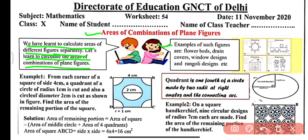Examples of such figures are flower beds, drain covers, window designs, and rangoli designs. First of all, understand about quadrant: a quadrant is one fourth of a circle made by two radii at right angles and a connecting arc. Keep in mind that a quadrant is the one-fourth part of a circle.